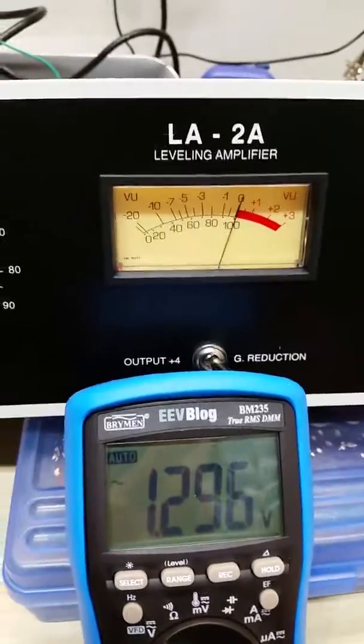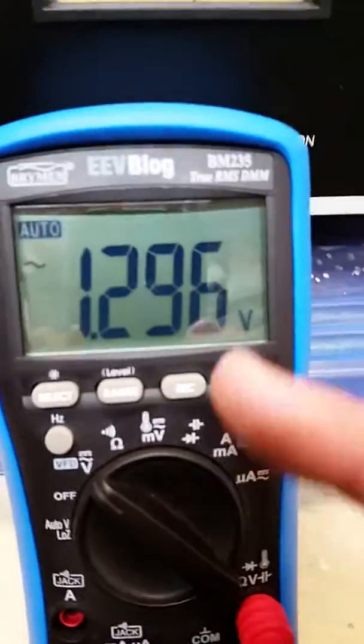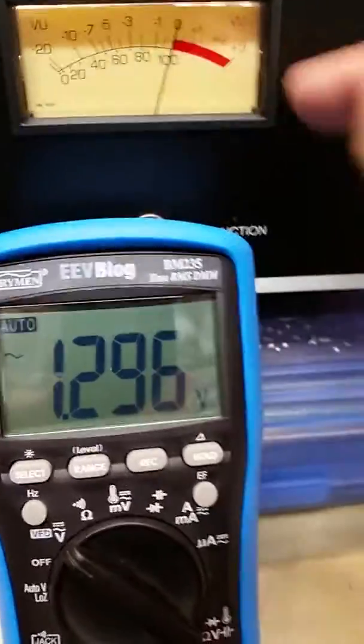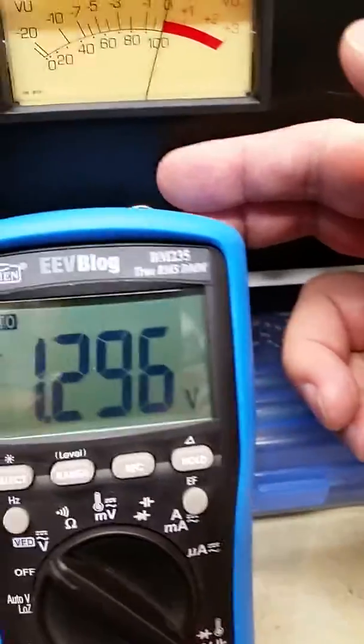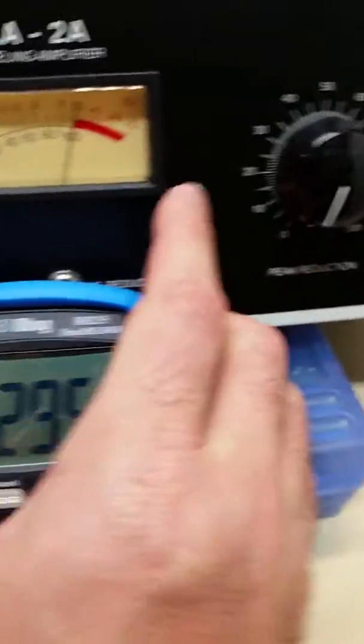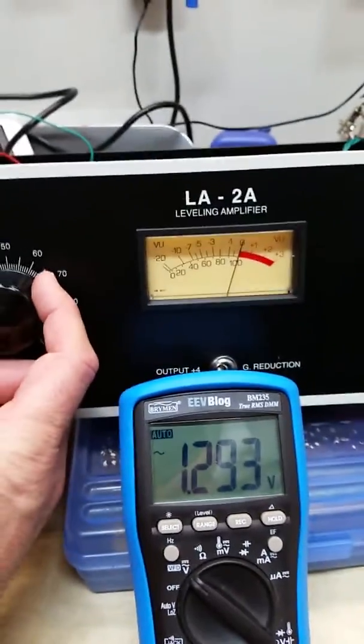But the purpose of this video is to show that this meter is showing the output. It's 1.2, which is basically where the meter zeros, right? So if I show output...